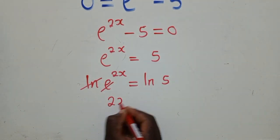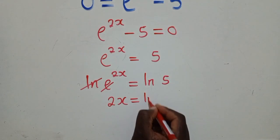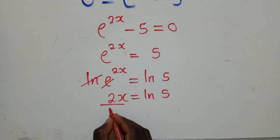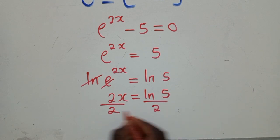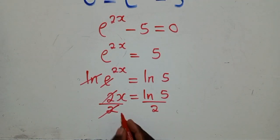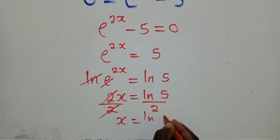We shall remain with 2x is equal to ln of 5. Thereafter, we divide by 2. So 2 and 2 will go. We shall remain with x is equal to ln of 5 over 2.